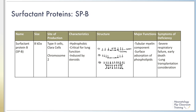Surfactant protein B is a hydrophobic protein that is necessary for lung function. The hydrophobic nature of the protein helps to anchor it at lipid surfaces. It is produced by type 2 and Clara cells. The genes for surfactant protein B are coded on chromosome 2, and surfactant protein B is 8 kilodaltons in size. Its production is also induced by steroids in vitro.